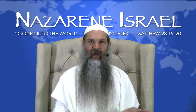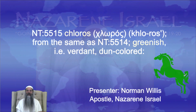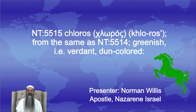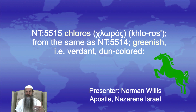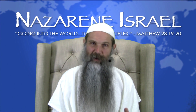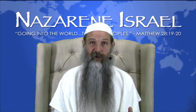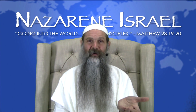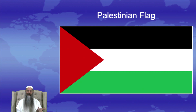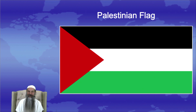The King James Version says pale horse, but when we look it up, it's Strong's New Testament 5515, which is chloros, translating to greenish color — much like chlorophyll is green. So effectively, it's green. How does this manifest in real life? Most of the flags of the original twelve Muslim nations have the four colors of the apocalypse in their flag.